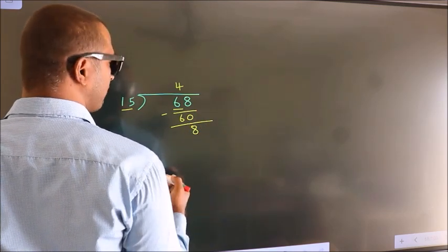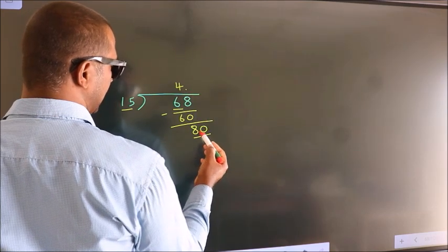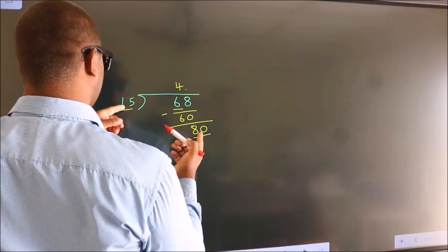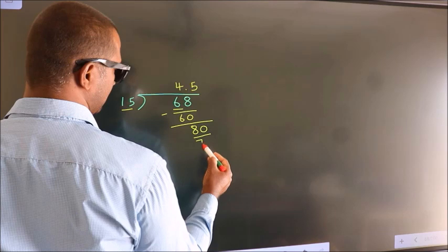So what we do is we put dot, take 0. So 80. A number close to 80 in 15 table is 15 fives, 75.